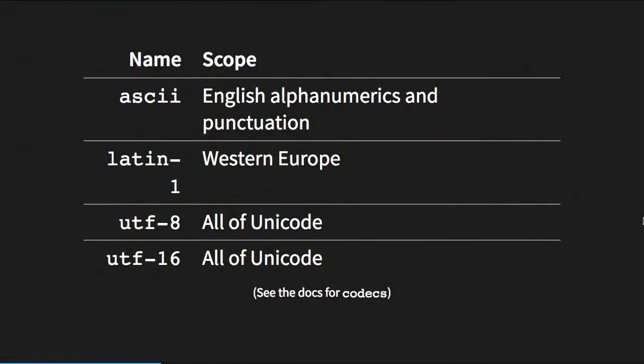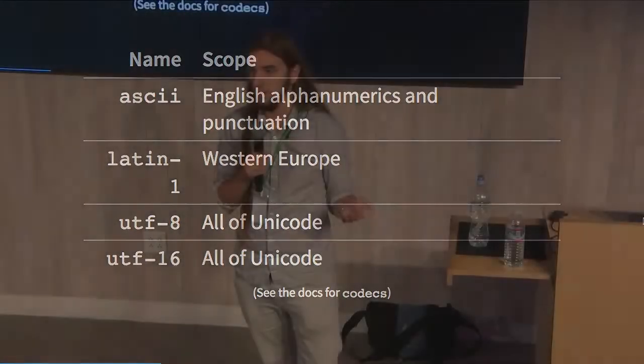These are some codecs that Python comes with. They all have a scope. ASCII, for instance, encodes basically all the letters in the English alphabet plus some punctuation — enough to cover American English. There are literally hundreds of codecs. Latin-1 focuses on languages spoken in Western Europe, so it encodes French accents, etc. And then there's UTF-8 and UTF-16, which are specifically designed to handle all of the Unicode code points.